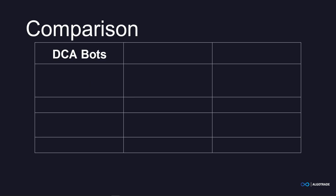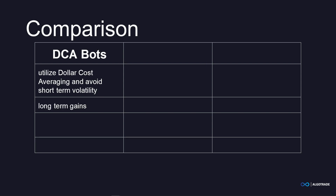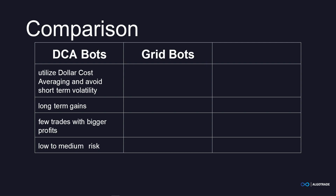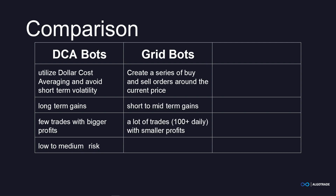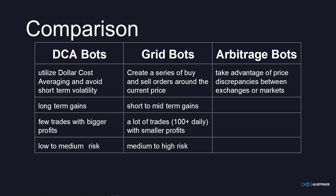Let's have a quick look at all the different types of bots again. DCA bots utilize dollar cost averaging by buying at regular intervals and avoiding short-term volatility. They focus on long-term gains while making few trades with bigger profits, and are low to medium risk depending on your configuration. Grid bots work by creating a series of buy and sell orders above and below the current price, profiting from very small fluctuations. They focus on short to mid-term gains with a lot of trades and smaller profits, and are medium to high risk. Arbitrage bots take advantage of price discrepancies between different exchanges or markets. While exchange arbitrage is almost impossible today, Spot-Futures arbitrage offers the best risk-to-reward ratio, focusing on long-term gains while generating profit almost every eight hours with the lowest risk of all bot types.